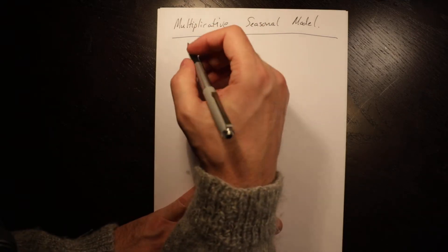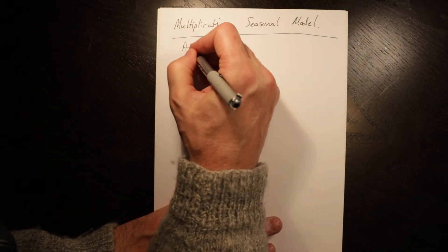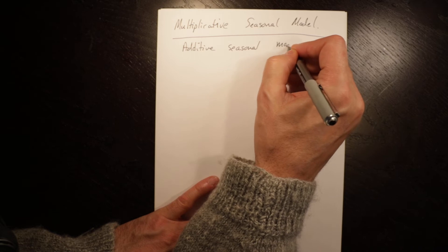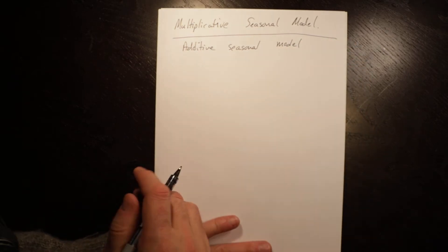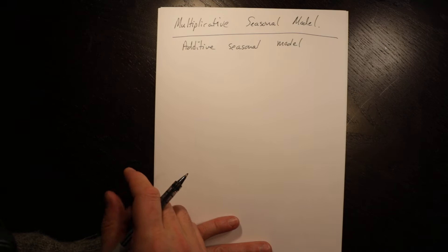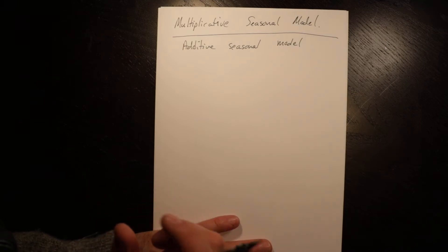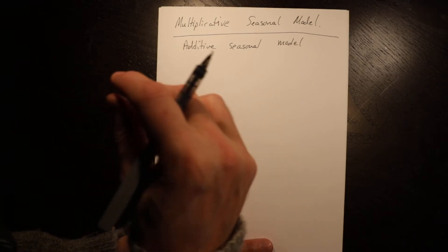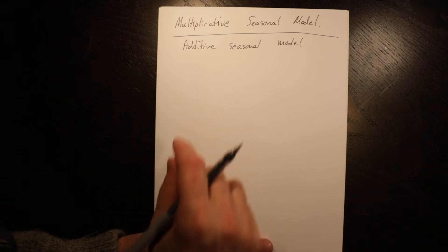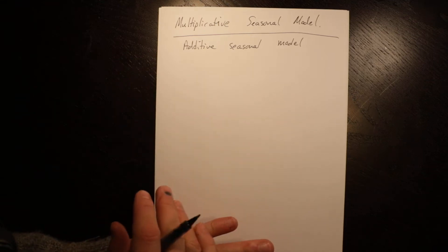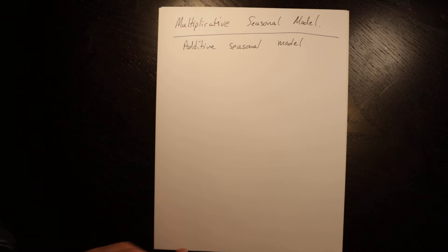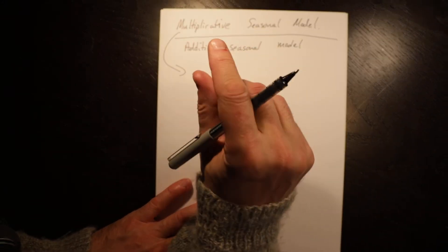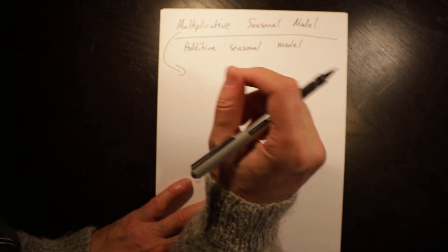Another approach that we won't spend a lot of time on is called the Additive Seasonal Model. In that case, all you do is add or subtract an absolute value from your forecast for the aggregated period. So you say this one is two units higher and this season is two units lower, and you just subtract it from whatever your moving trend is. With the Multiplicative Seasonal Model, what we do is we take a proportion and multiply it.